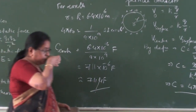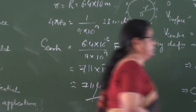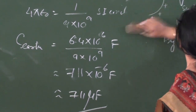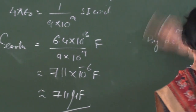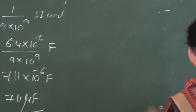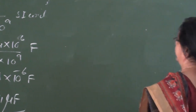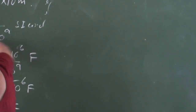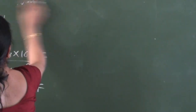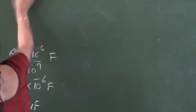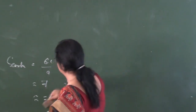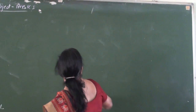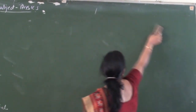Now, what we are going to do is see on what dimensions the capacity depends and how we can increase the charge-storing capacity of a conductor. For the spherical conductor, we have already seen that it depends upon the radius.